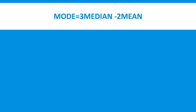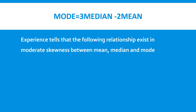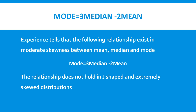تاہم جو distribution extremely skewed ہو — یعنی بہت زیادہ left tail یا بہت زیادہ right tail ہو، یا shape جے (J) کی طرح بن رہی ہو — وہاں پر mean، median اور mode کا یہ empirical relationship exist نہیں کرتا۔